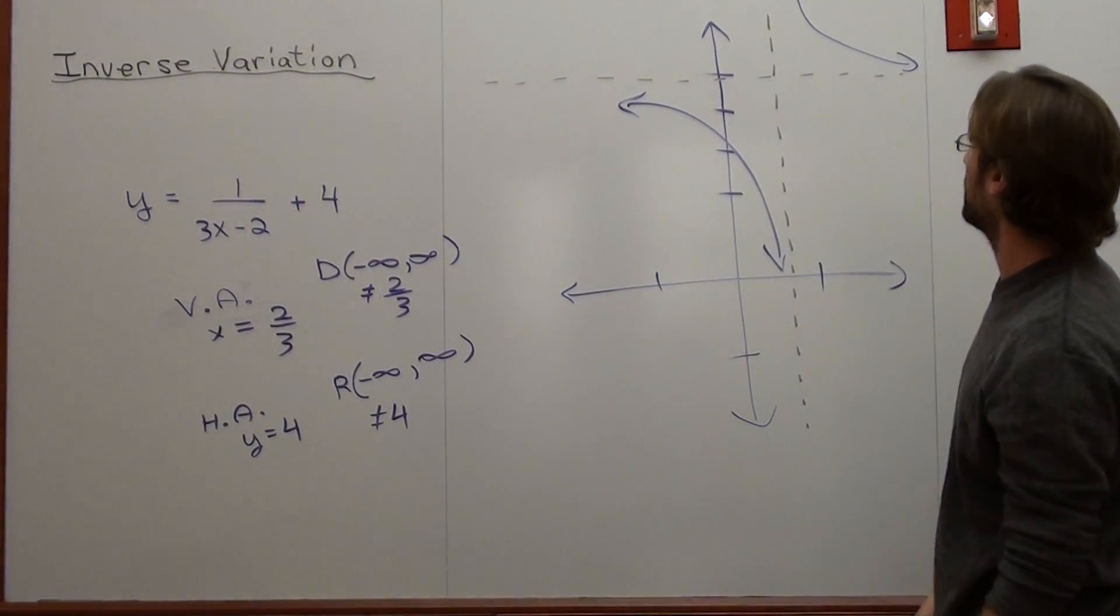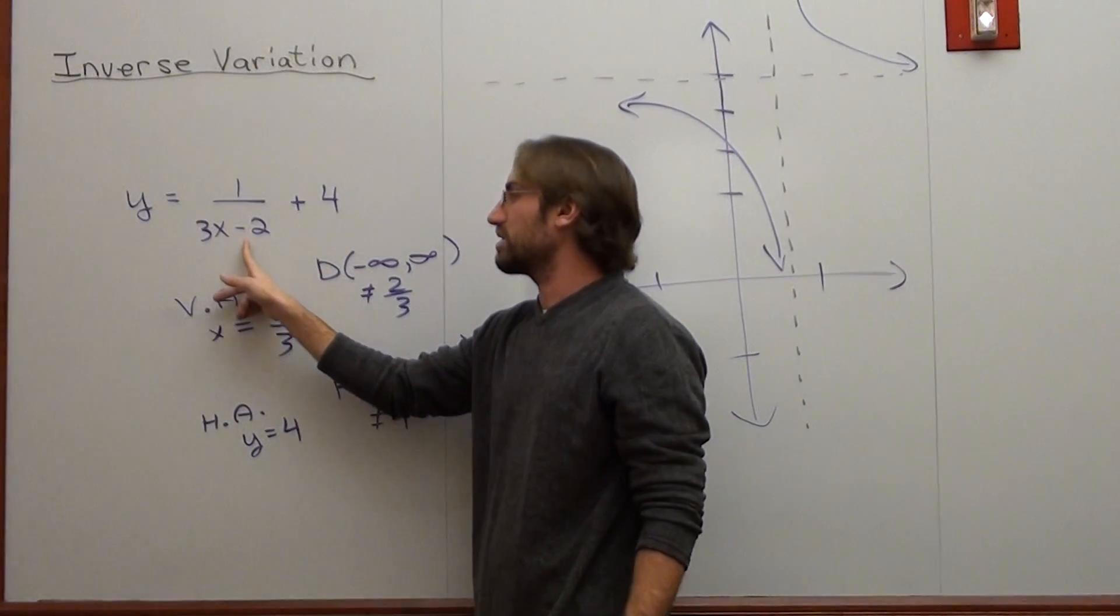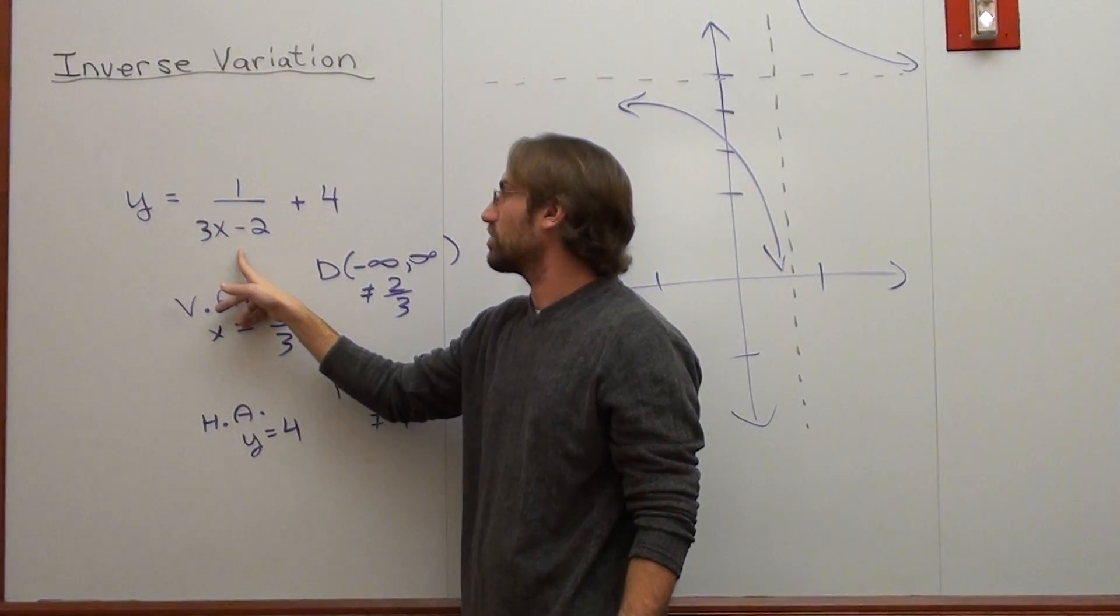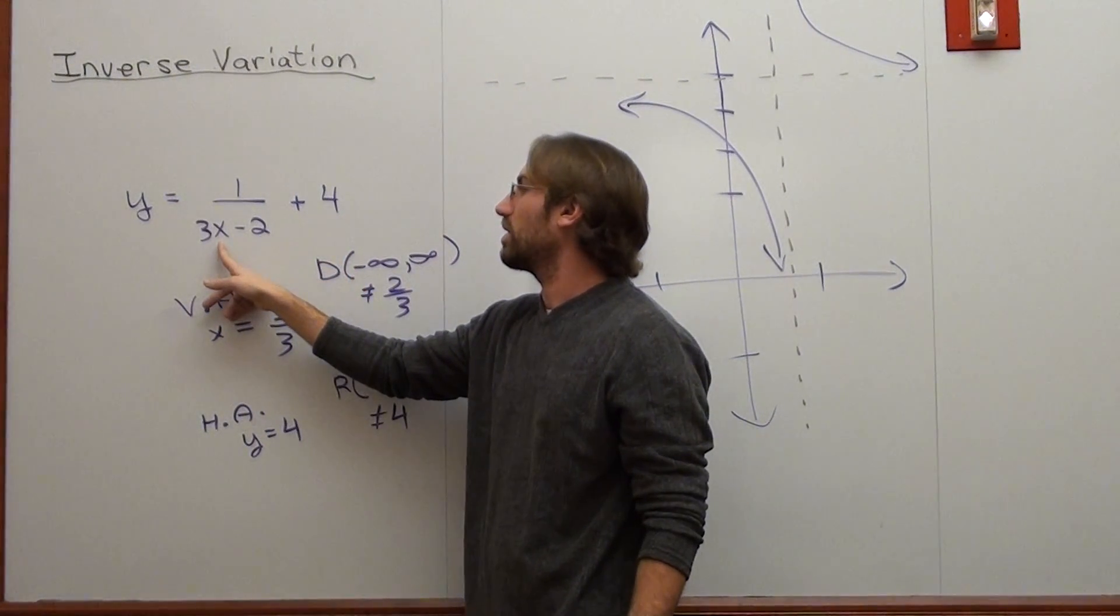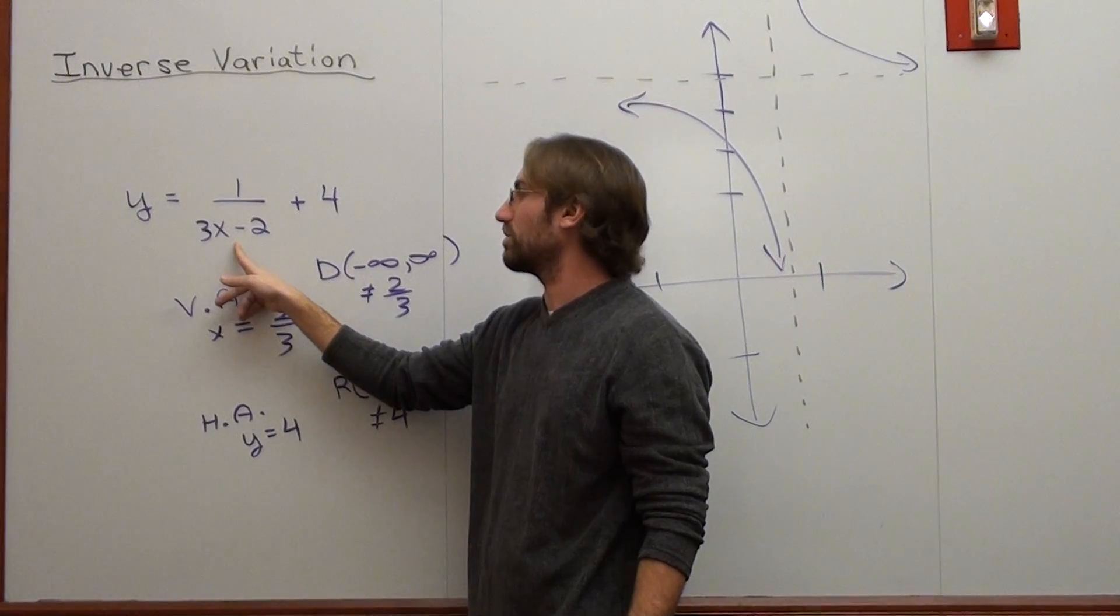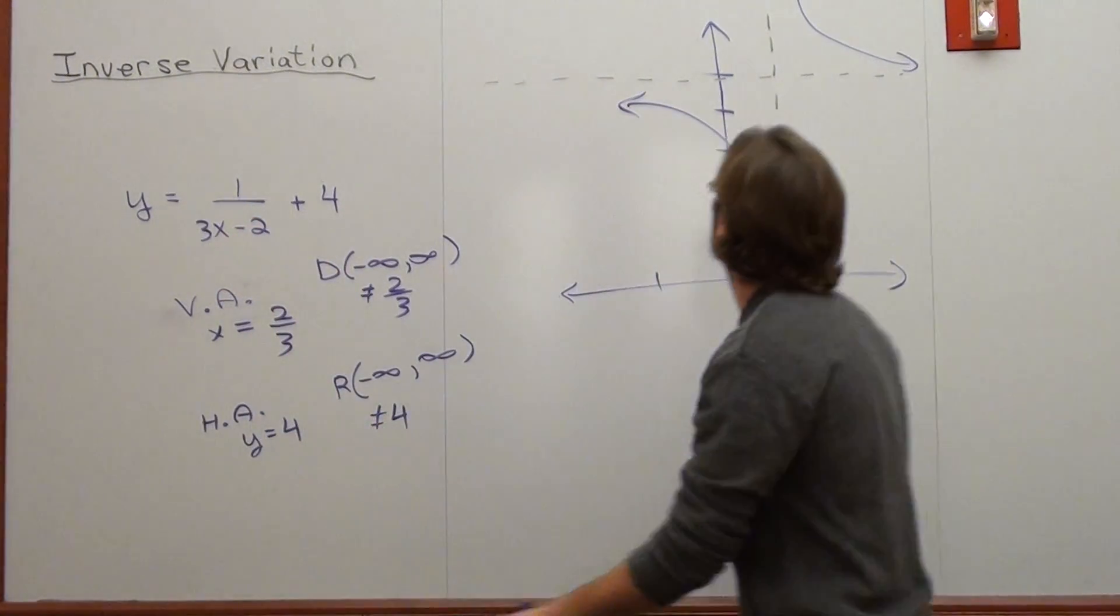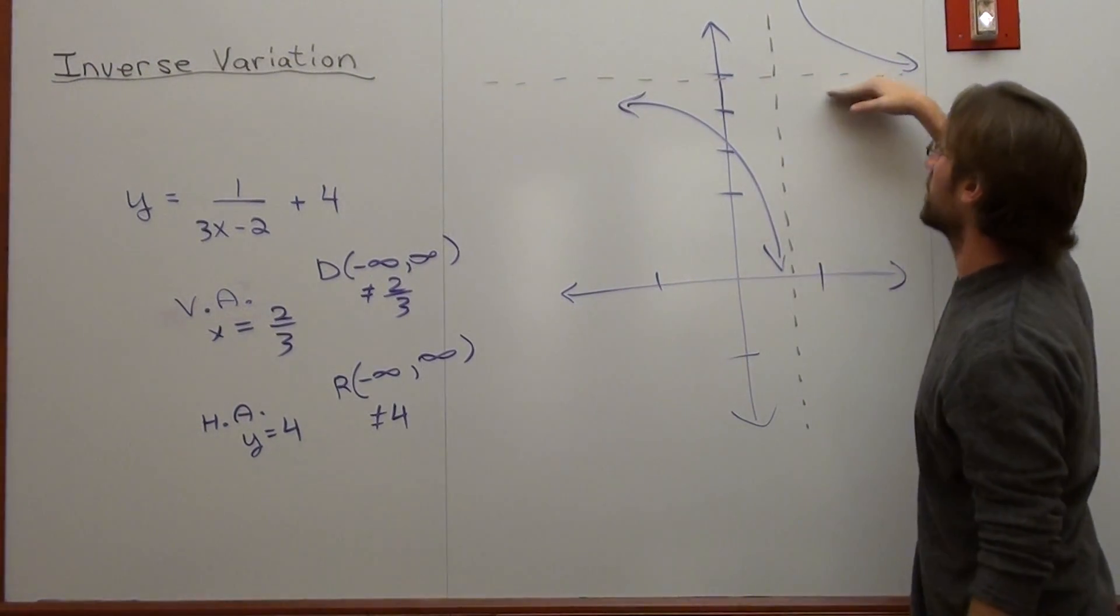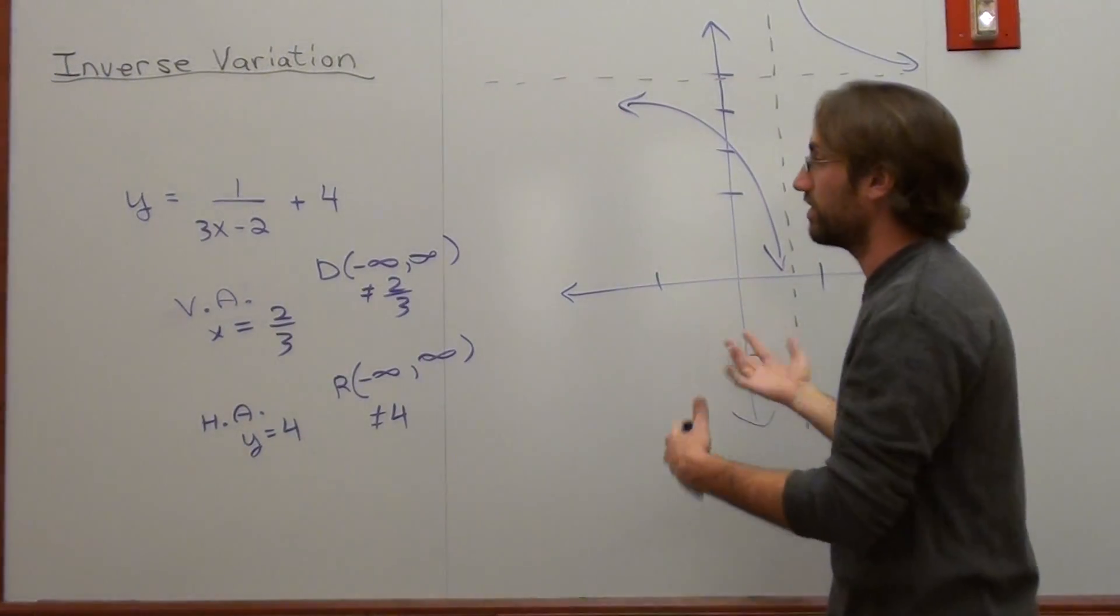That's pretty much it. If I substitute in the number 1, it'll be 3 subtract 2, which is 1. 1 divided by 1 is 1 plus 4. 5. So if I do that, it'll be at 5. So it'll never actually hit this axis or this axis. But that's using all the previous information we knew.